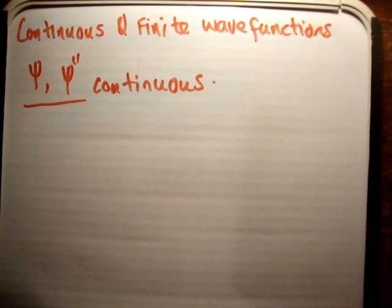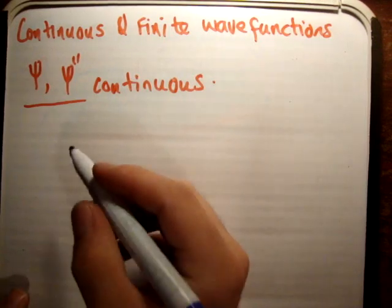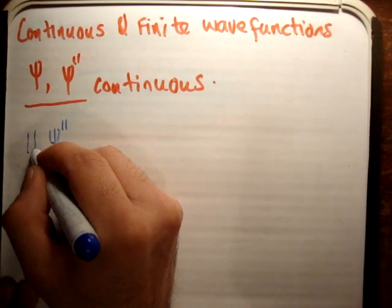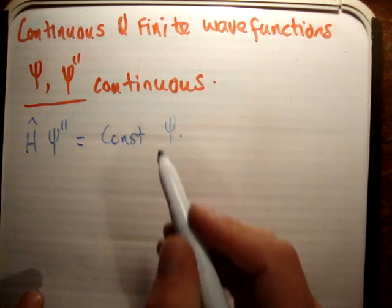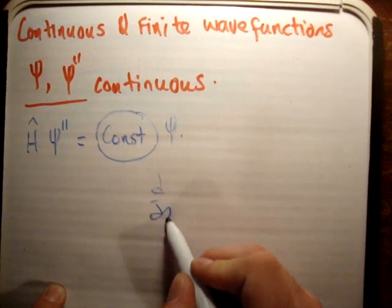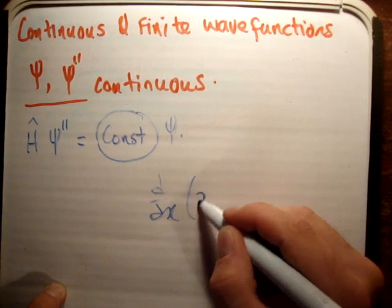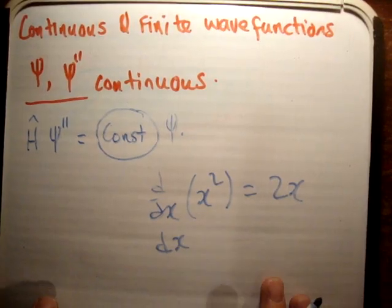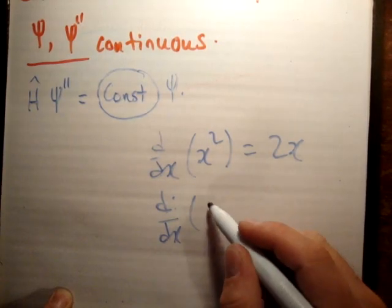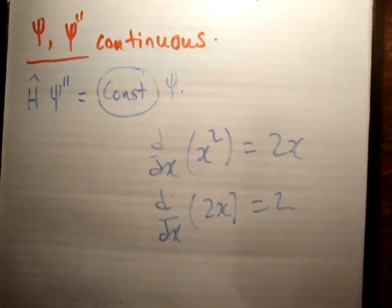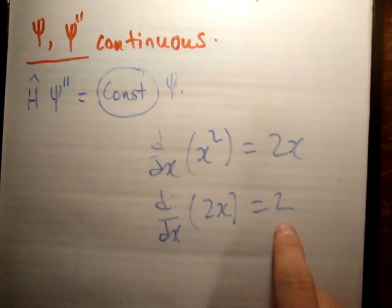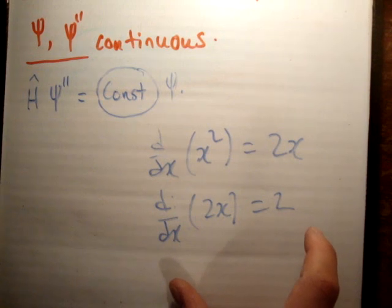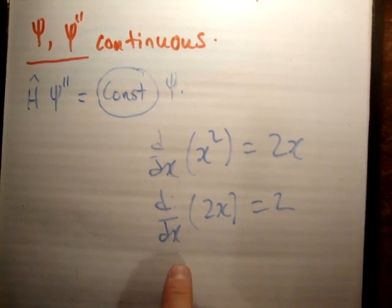So how do we know that the wave function and the second derivative are continuous? We know that because psi double prime, or the Hamiltonian times psi double prime, is equal to a constant times psi. What that means is: d/dx of x² is equal to 2x, and d/dx of 2x is equal to 2. If the function x² was not continuous, we wouldn't be able to get a finite value for d/dx of 2x. In other words, the derivative prior to the one you're talking about must be continuous in order for your current one to be finite.